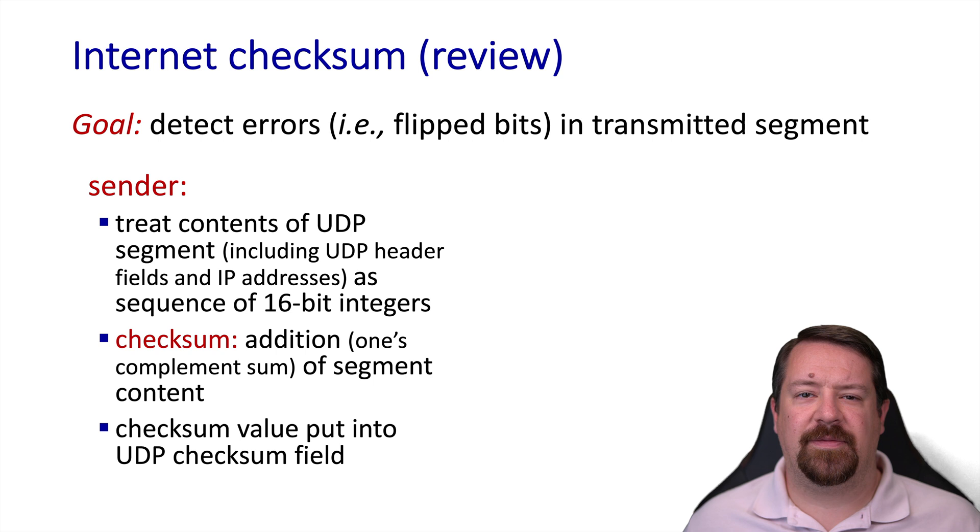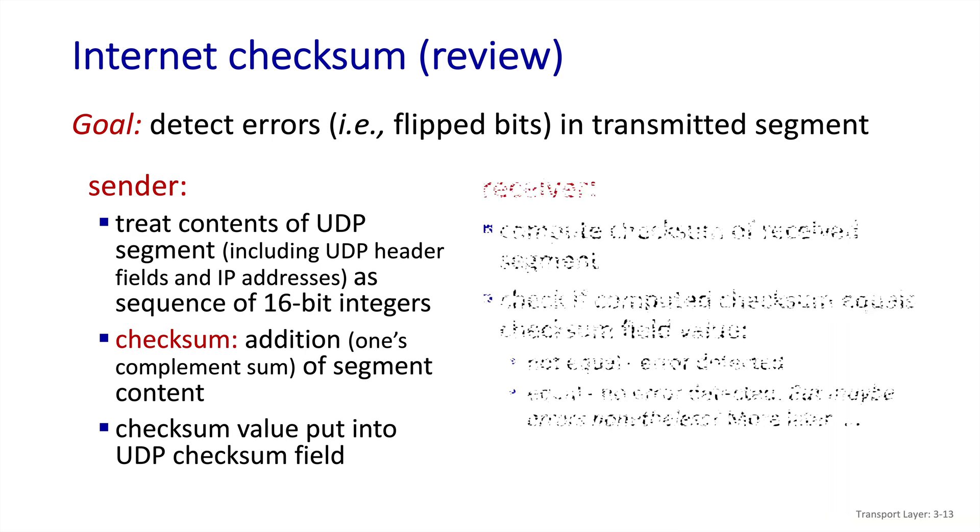As we mentioned, we've seen the checksum before in the UDP header. It works by treating the entire UDP datagram as a sequence of 16-bit integers, adds them all up using the one complement sum, and then stores the checksum, the inverse of the sum, in the UDP header. On the receiver's side, we compute the checksum of the received segment and see if it matches the checksum field value. Now this scheme has no error correction. It can detect errors, but all it can do at that point is discard the segment. It has no way of telling which bit or bits were flipped along the way. As we also mentioned, this is a weak checksum, and there's a certain combination of bit errors that could get past it.